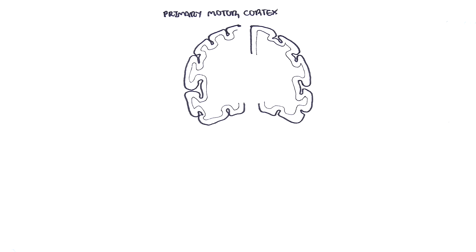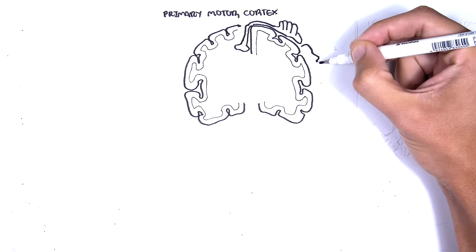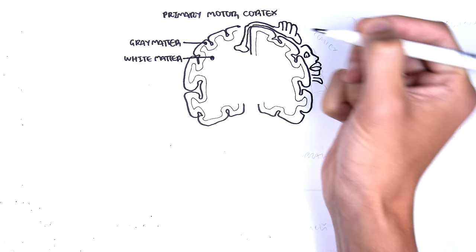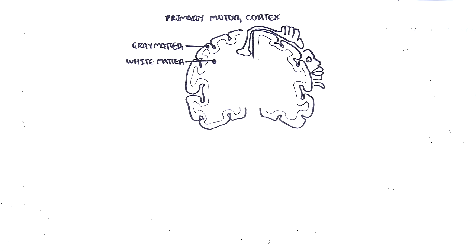Normal motor function depends on the transmission of signals from the brain to the brainstem or spinal cord by the upper motor neurons, and then from there to skeletal muscles by lower motor neurons. Here is a cross-section of the primary motor cortex of the brain. The outer gray matter of the cortex has areas where neurons arise from, associated with a particular area in the body — the feet, hands, and the face. The white matter consists mainly of neuron axons, which travel through the brain. Motor neurons will pass through the internal capsule, situated near the thalamus and basal ganglia.